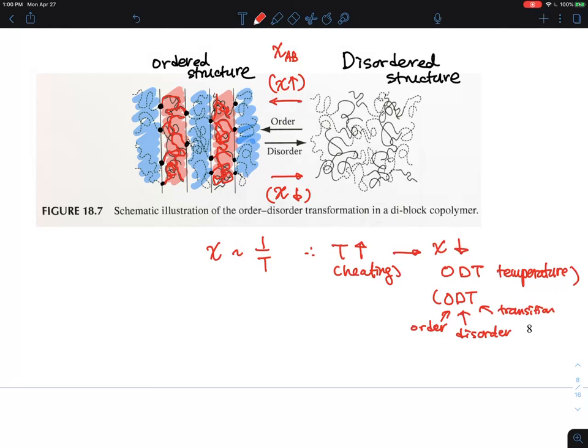But there is always an exception to the rule. Sometimes, just like an LCST behavior, you can have a lower critical order-disorder transition temperature. This phenomenon has been observed for systems such as polystyrene-polyisoprene, polystyrene-PMMA, polystyrene-PEO, and polybutadiene. These are all block copolymers whose phase behavior has been known.